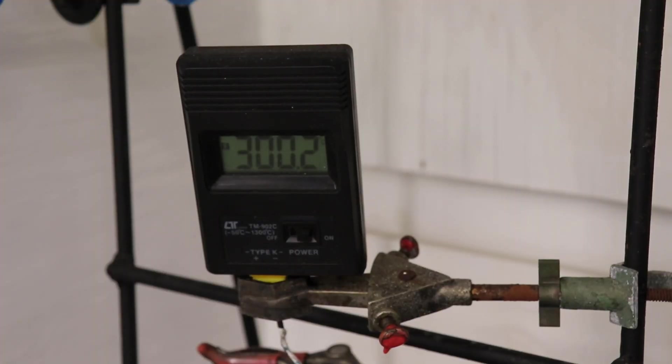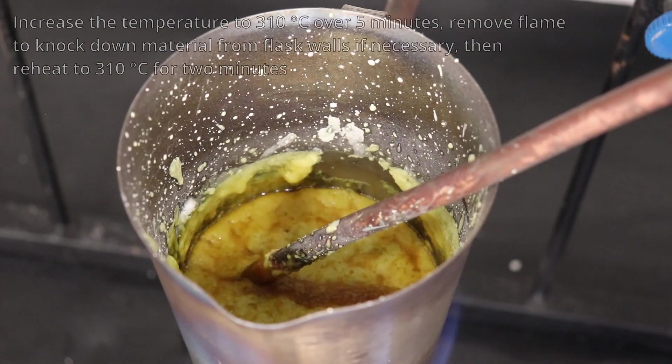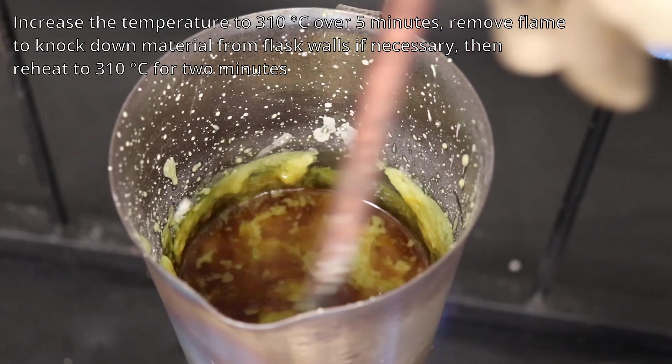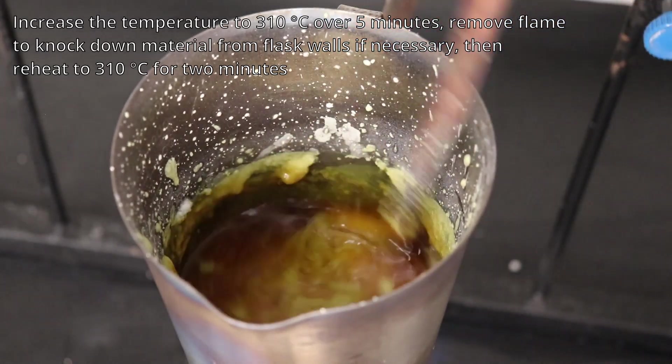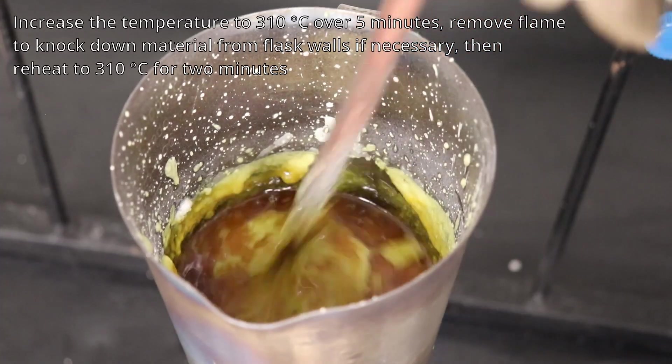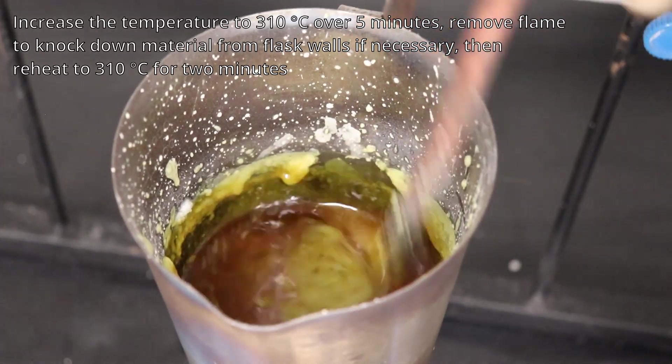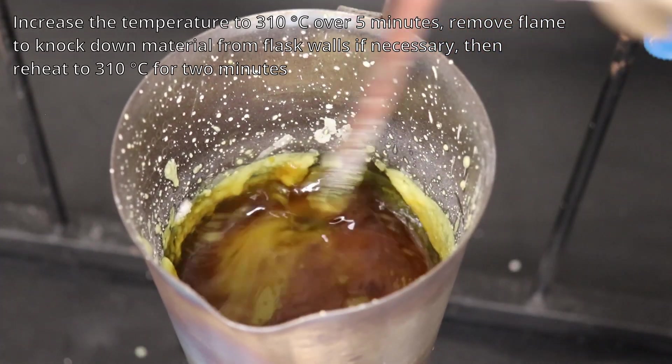Then over the course of 5 minutes, the temperature was increased to 310 degrees Celsius, then the flame was removed to push down the material on the walls of the crucible, after which the flame was reapplied and the mixture was reheated to 310 degrees Celsius for 2 minutes.